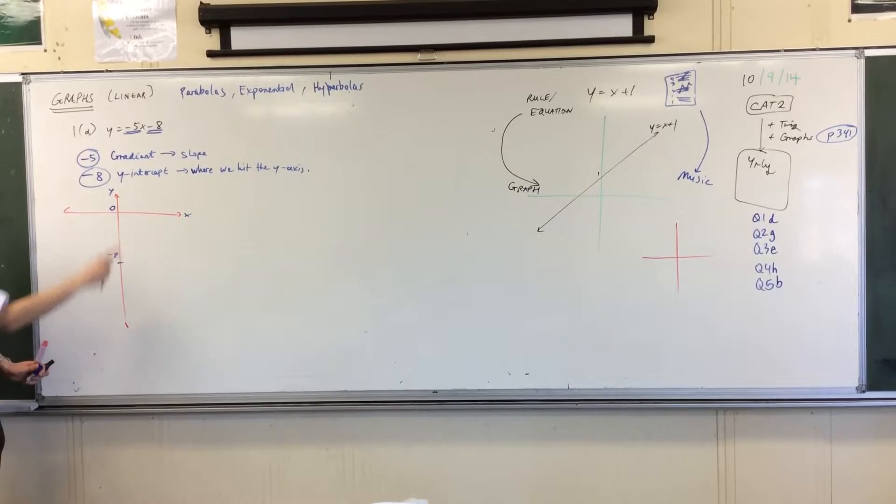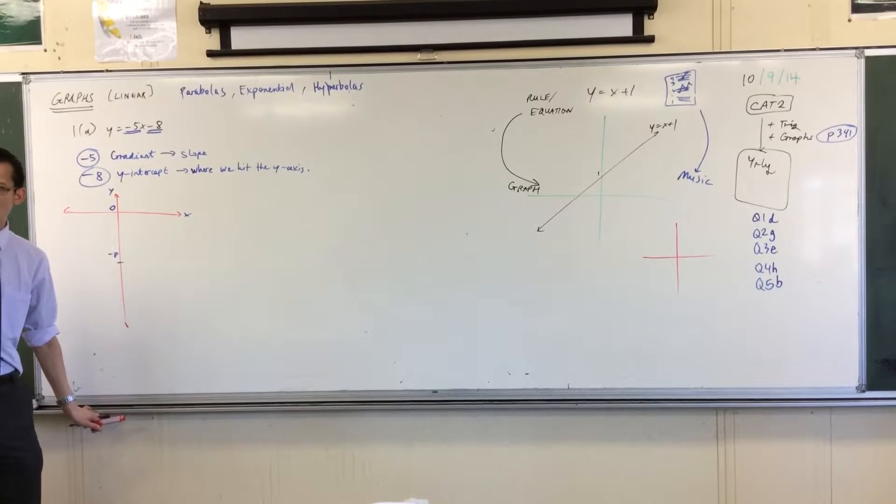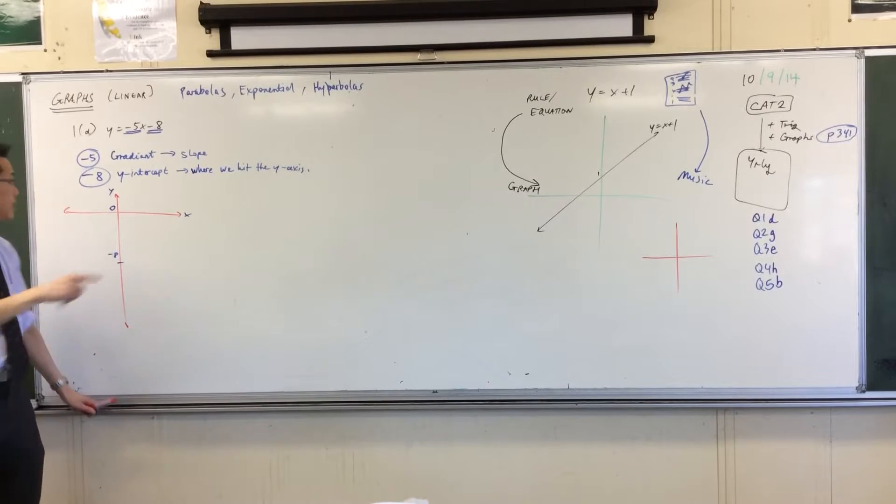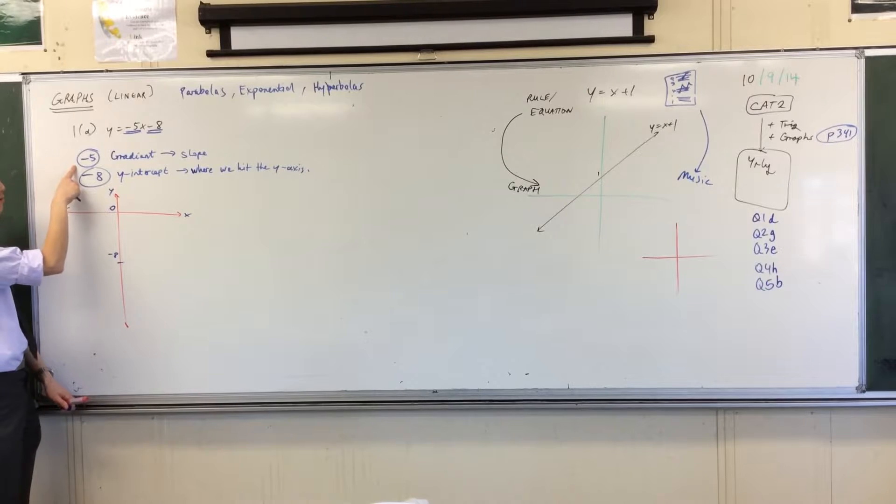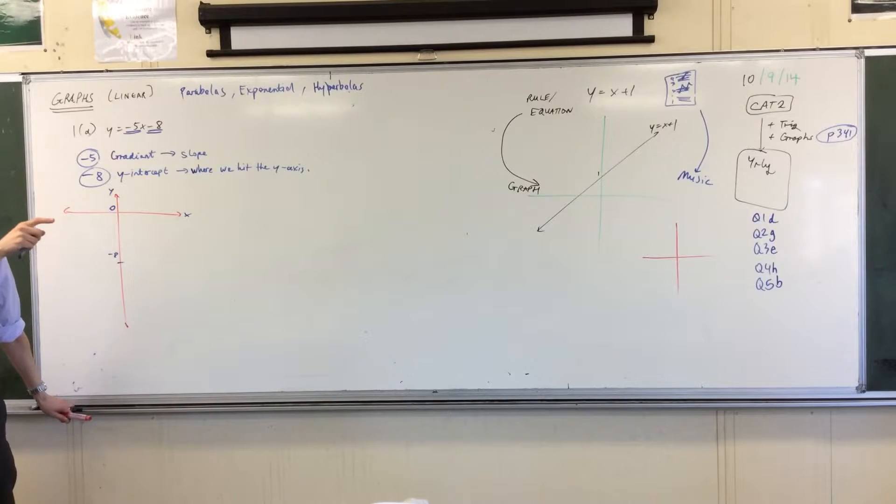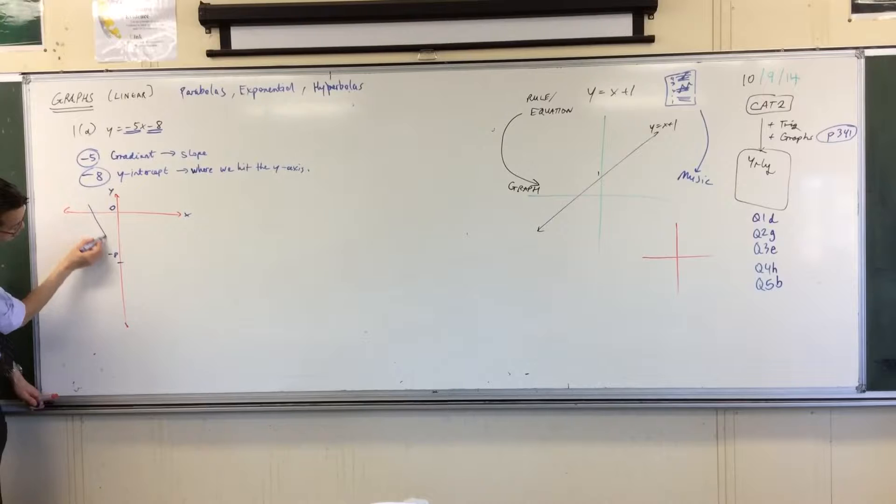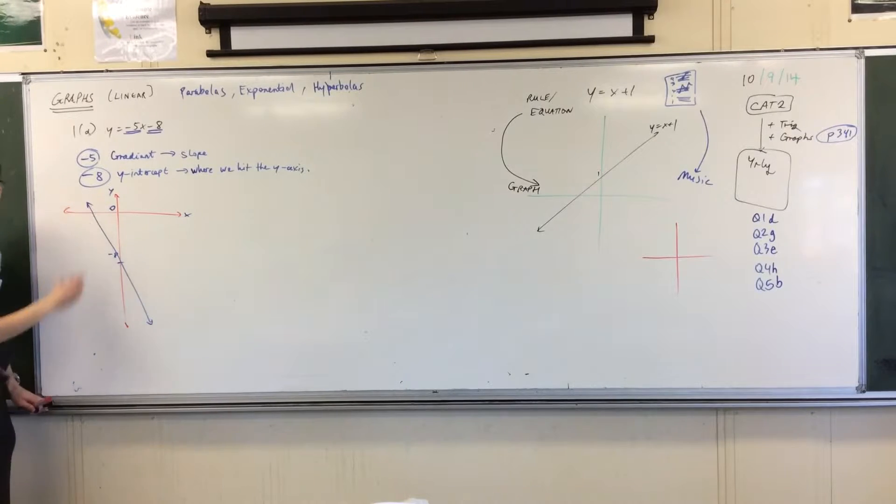So then I just need to draw my line. It has a gradient of minus 5. So what does that mean? It means it's dropping down, it's decreasing, it's not rising. It's dropping, I guess. And it's a 5, that's really, really steep, right? You just drop off like that. So I'm going to draw a line something like this. Super steep.